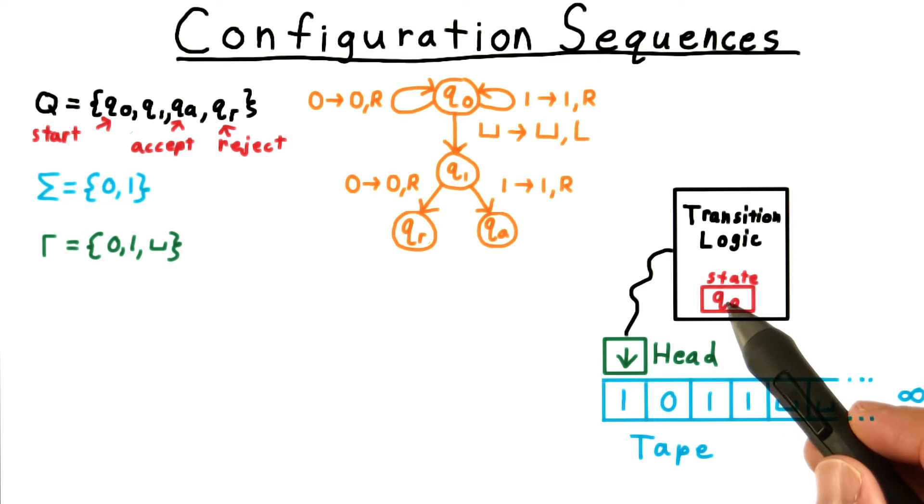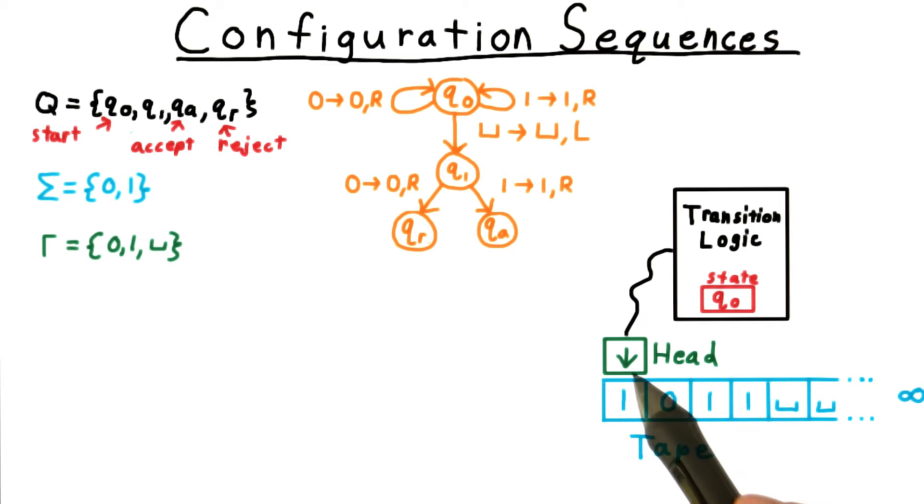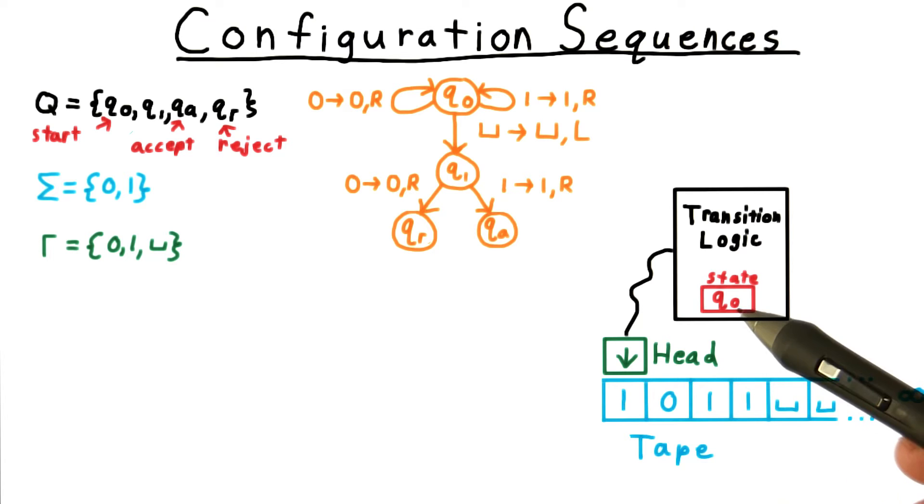We call this triple of state, tape content, and head position a configuration. And any given computation can be thought of as a sequence of configurations. It starts with the initial state, the input string, and with the head on the first location, and it proceeds from there.